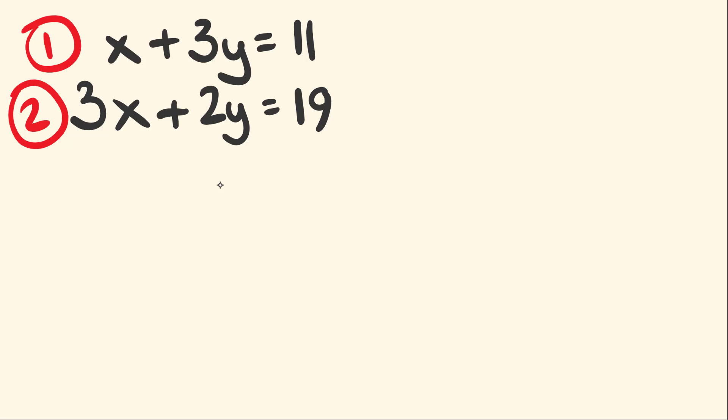But we can go through and we can multiply entire equations to make these coefficients match. So if we have a look at the x here, we have x and 3x. How much do you need to multiply 1 by to get 3? Well, we need to multiply that by 3. So we're going to make the x variables match by multiplying this entire equation by 3.